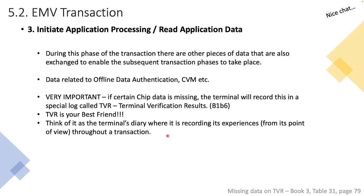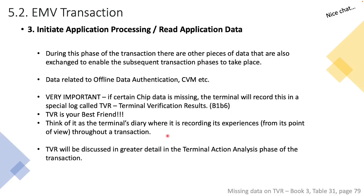Whatever experience the terminal goes through — for example, the terminal says: 'I asked for seven pieces of information and I only got back six — that one missing piece of data is of concern, so I'm going to make a note of it in TVR, in my diary, so there is a record of this event.' That covers TVR at a high level for now. We will be speaking about TVR in greater detail later during the Terminal Action Analysis phase of the transaction, where we will actually go through what the TVR report looks like.